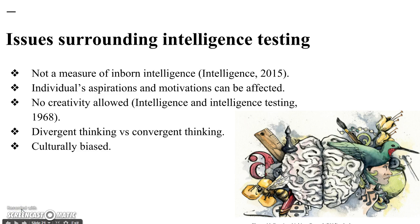Intelligence measuring is also surrounded by issues. For example, having knowledge of one's performance on an intelligence assessment can affect an individual's aspirations and motivation to obtain goals. Also, creativity is restricted because the individual is required to select a right answer or think like the test maker. The appearance of divergent thinking tests is establishing the practice of giving credit for the number, variety, and originality of responses, instead of following conventional convergent thinking tests.